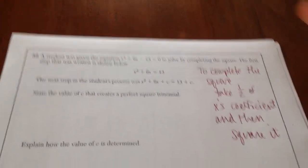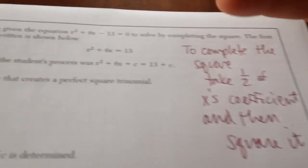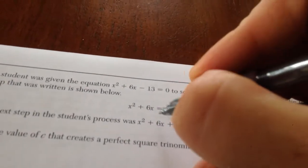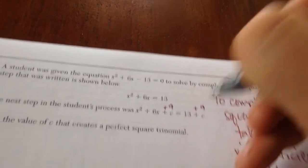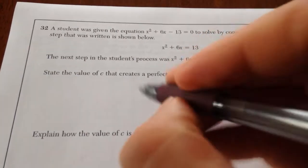Number 32 asks you to solve this by completing the square. Generally, to complete the square, we're going to take one half of x's coefficient and then square it. So in this case, one half of 6 is 3, and then we're going to square 3. So that means that we're going to add 9 to both sides. State the value of c that creates a perfect square trinomial. 9.